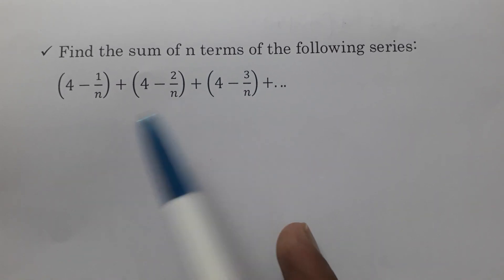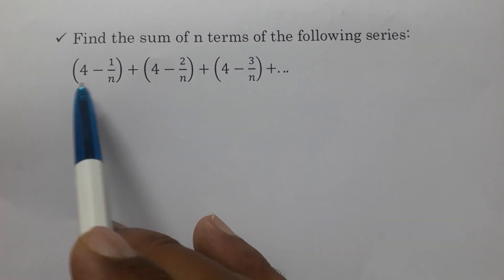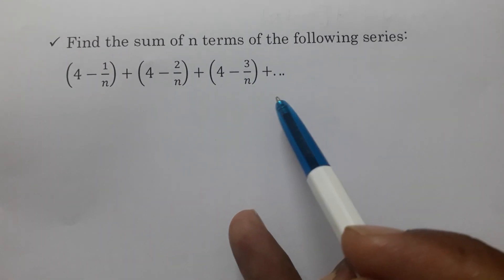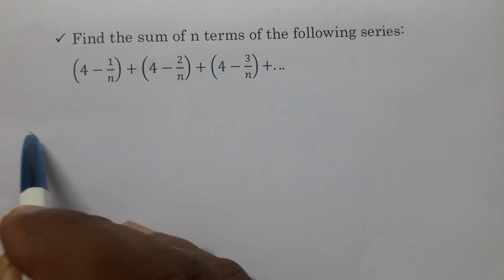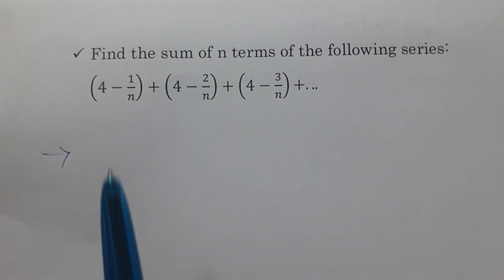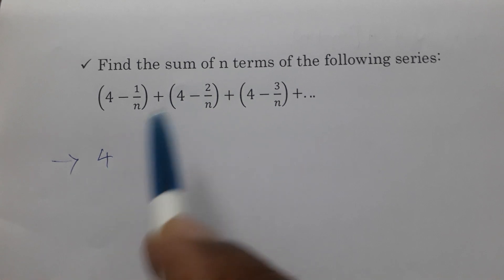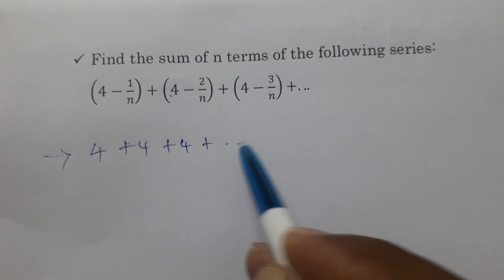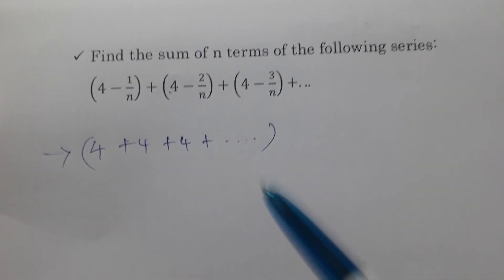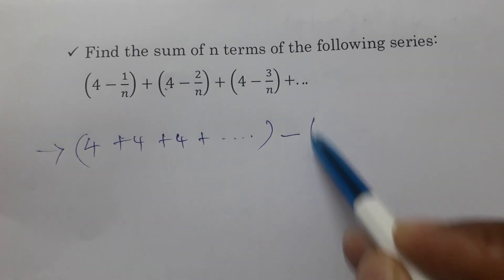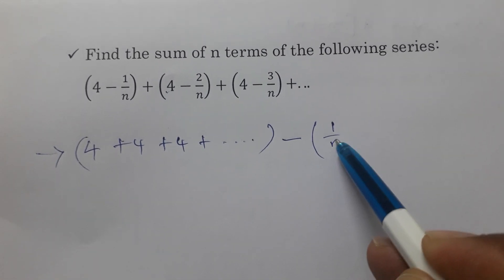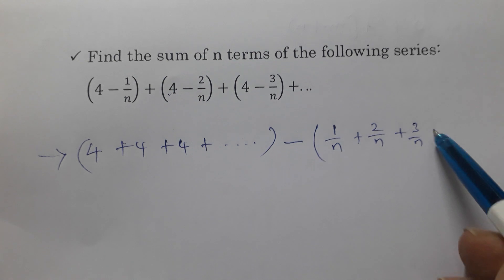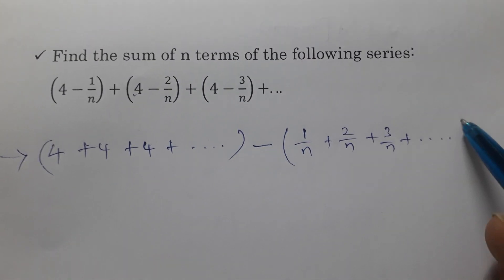Find the sum of n terms of the following series: (4 - 1/n) + (4 - 2/n) + (4 - 3/n) + ... The first step is to split this into two parts: (4 + 4 + 4 + ... n times) minus all the fractional terms (1/n + 2/n + 3/n + ... up to n terms).